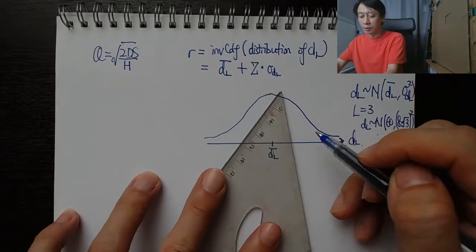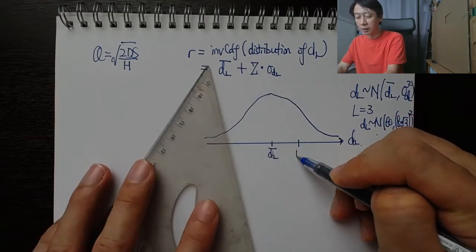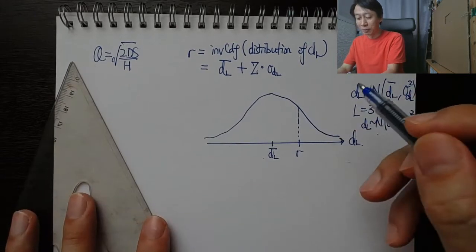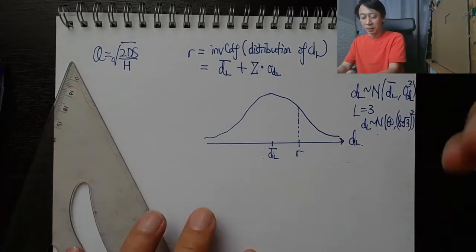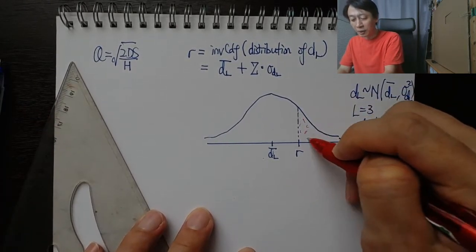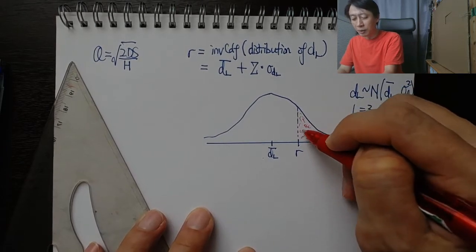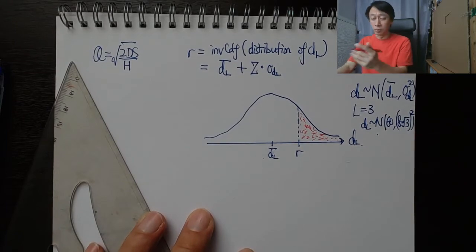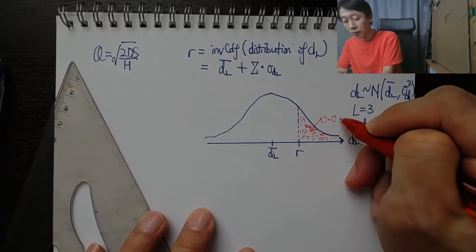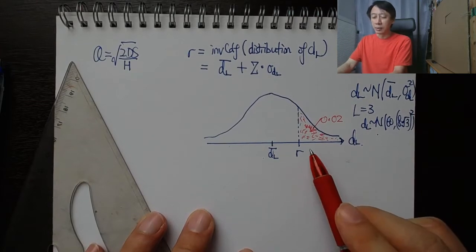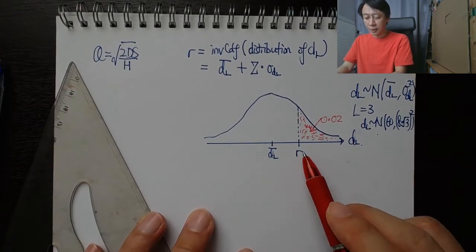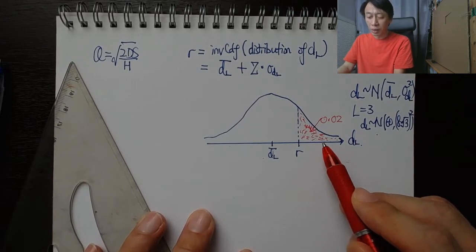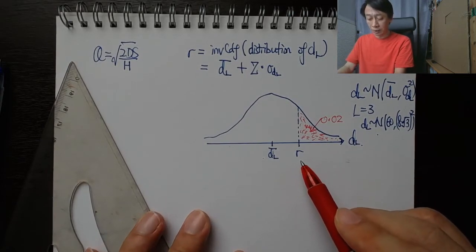If that's the case, then r is this mark here where it gives us, I think I gave too much allowance, but it gives us two percent of probability of being stocked out. Probability in normal distribution is the area, so the area that reflects the demand during the time being larger than what we have in our reorder point.